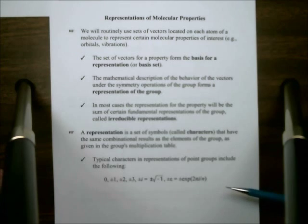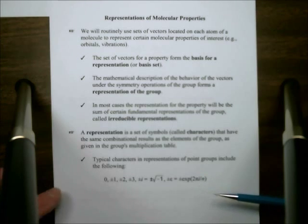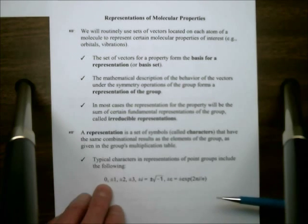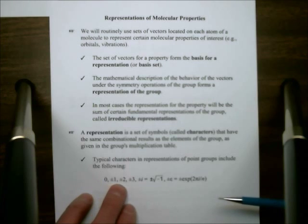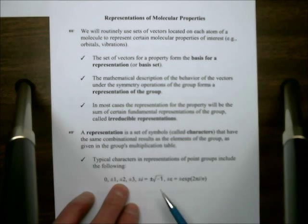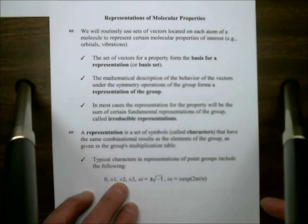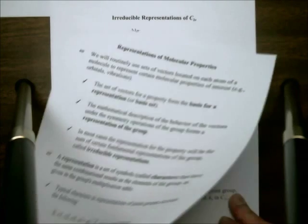In some cases, we'll be constructing representations that are not simple numbers, but are rather matrices. But the irreducible representations are composed of characters. You'll see zeros and plus and minus ones, plus and minus two, plus and minus three. And there are some that actually use the imaginary integer square root of minus one, or expressions involving i.